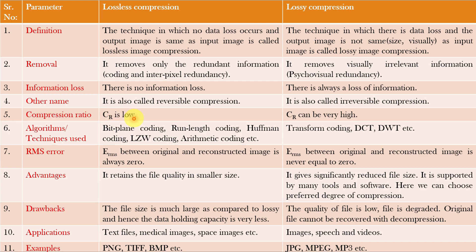The compression ratio for lossless compression is low. From the last few video classes, we found that the compression ratio is around 1.7 to 1.9 or so. Whereas the compression ratio for lossy compression can be very, very high — it can be 5 to 8 times or even more.